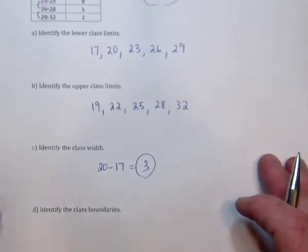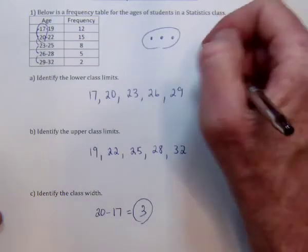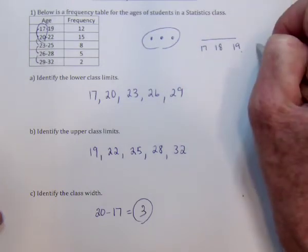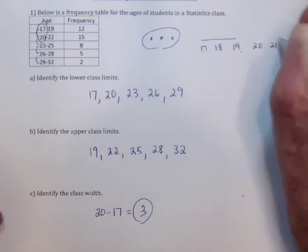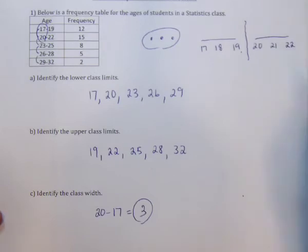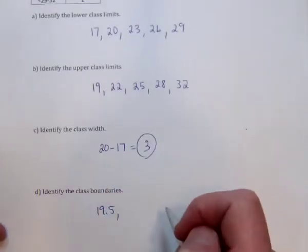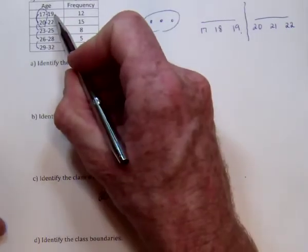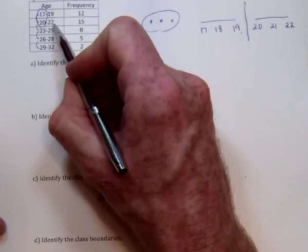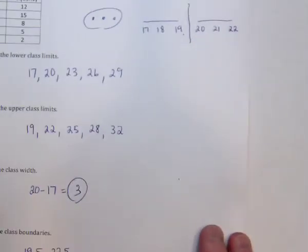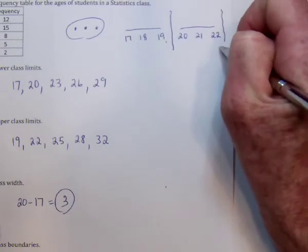Next, the class boundaries. If you look at the first class, it goes from 17 to 19, and the next one goes 20, 21, and 22. The boundary is between those two. Between 19 and 20, you average them to get 19.5. So the class boundaries would be 19.5. The next one, adding 0.5, would be 22.5.